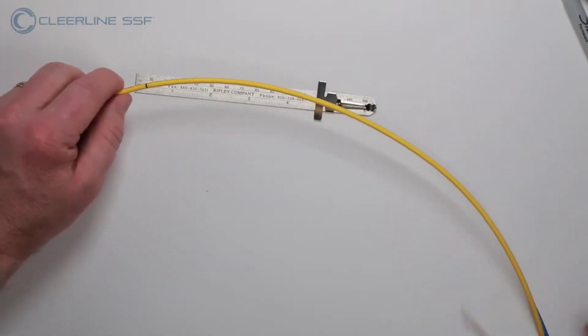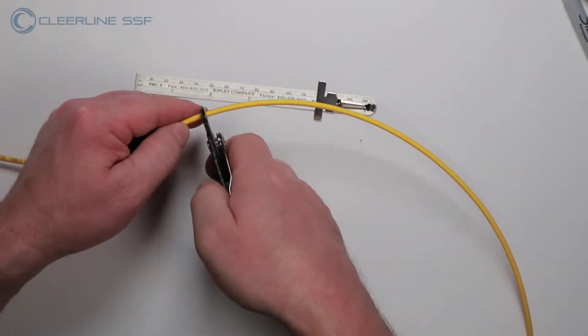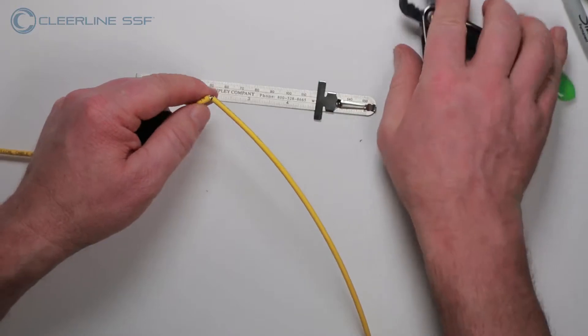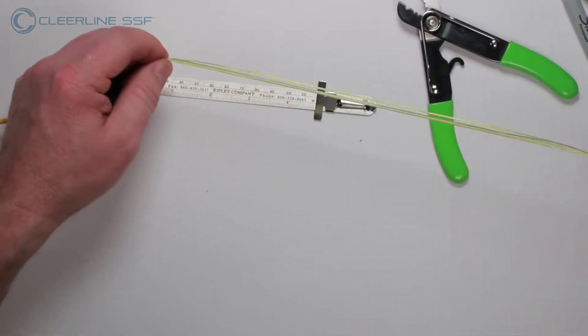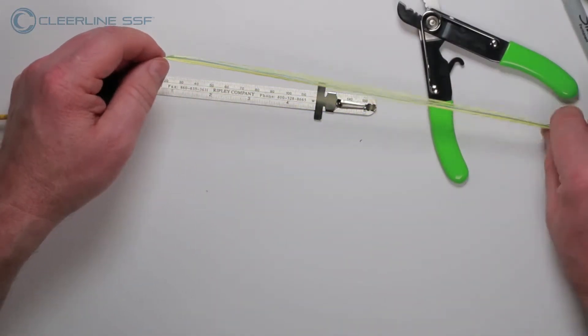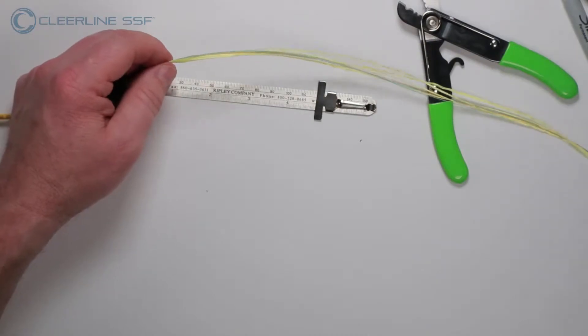Using the stripper's 2mm opening, remove the jacket at this point so that the stripped length of the exposed fiber is equal to the breakout tubing and assembly plus 6 inches or 15 centimeters.